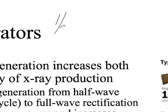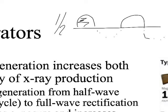Half-wave rectification looks like a sine wave where we've sawed off the negative parts and are only using the positive bumps. So we get an x-ray, then no x-ray, then an x-ray, then no x-ray — it's like the Revolutionary War soldier having to reload his musket. At 60 cycles per second, there are 60 of these little bumps every second. This is also why we could see individual dots on the spinning top test with the small room.